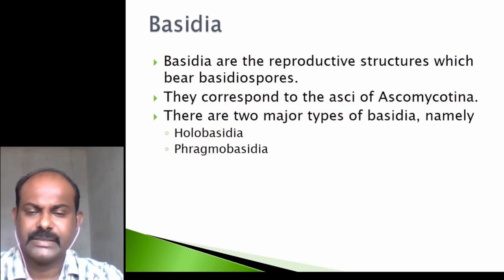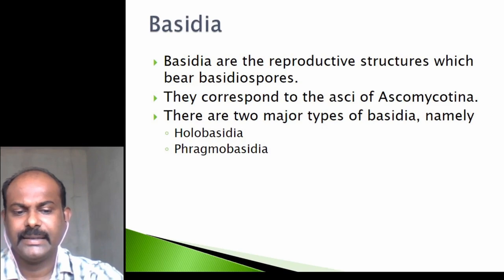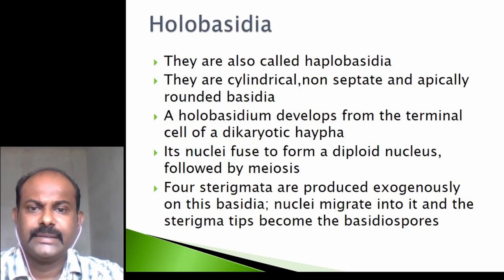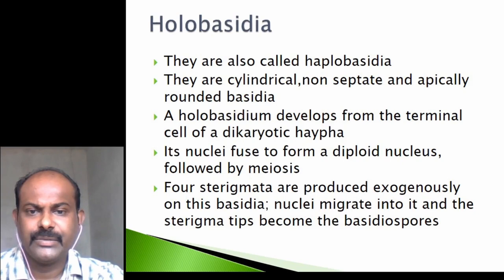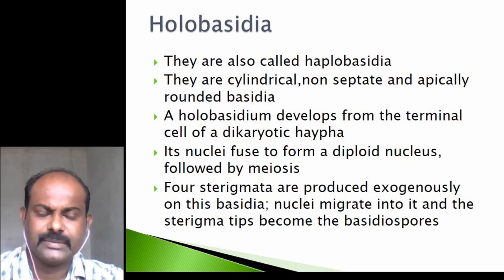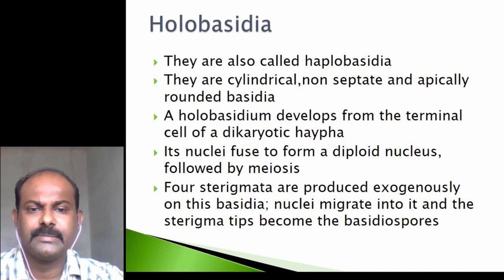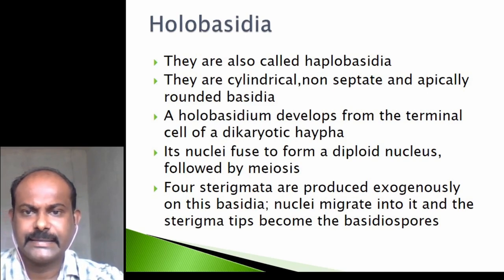Basidia are reproductive structures which bear basidiospores and correspond to the ascus of ascomycotina. There are two major types of basidia: Holobasidia and Phragmobasidia. Holobasidia, also called Apobasidia, are cylindrical, non-septate, and apically rounded club-shaped basidia. The holobacidium develops from the terminal cell of the dikaryotic hyphae. The nucleus in this cell fuses to form a diploid nucleus and then undergoes meiosis. Four sterigmata are produced exogenously on this basidium; nuclei migrate into them and the sterigmata become the basidiospores, so each basidium carries four basidiospores.